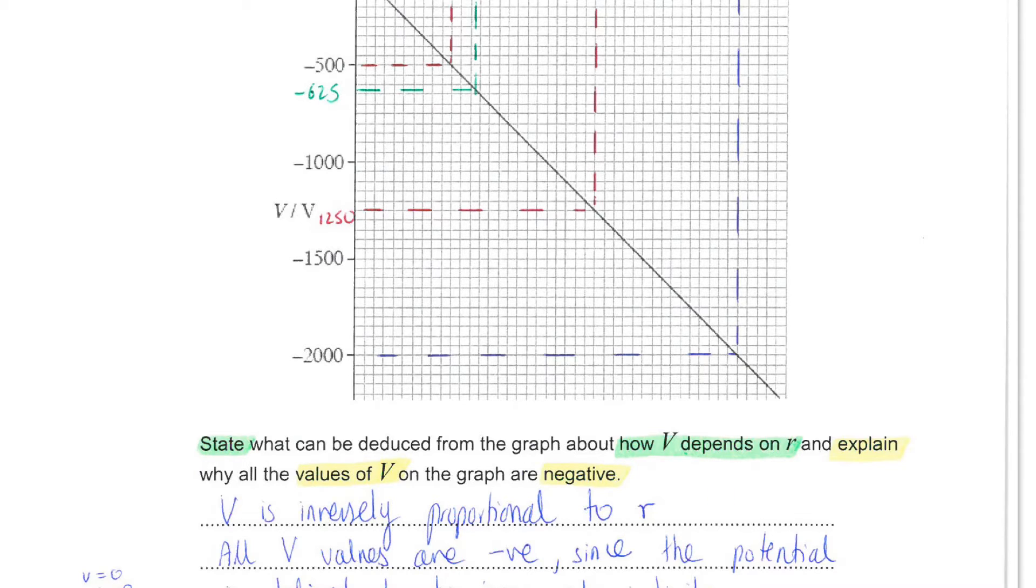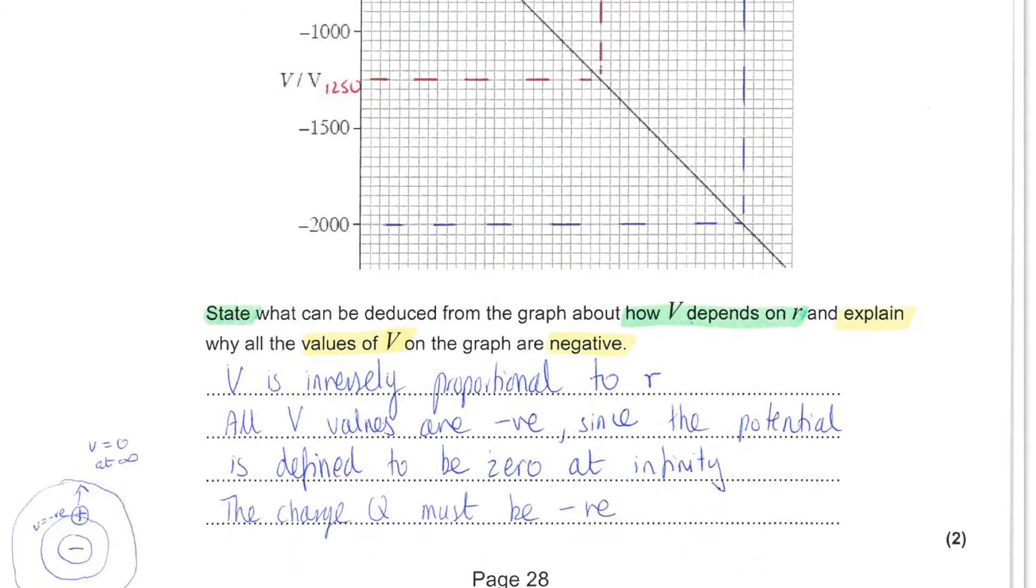Next, you are asked to explain why all the values for the potential on the graph are negative.